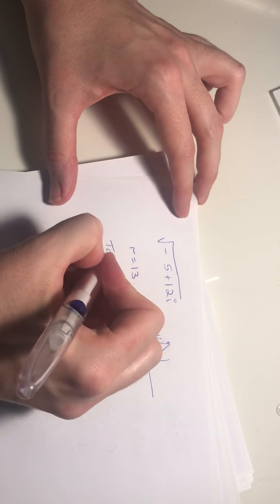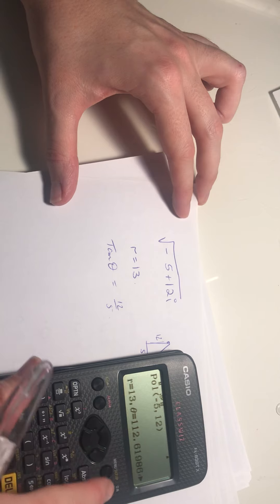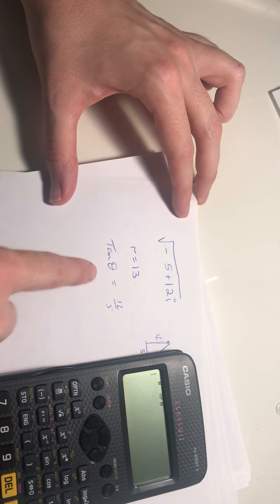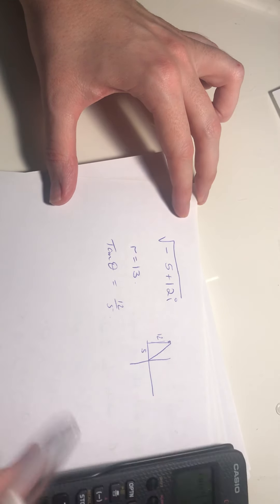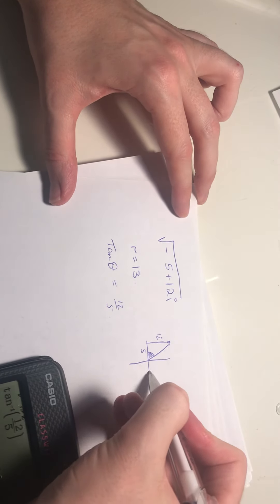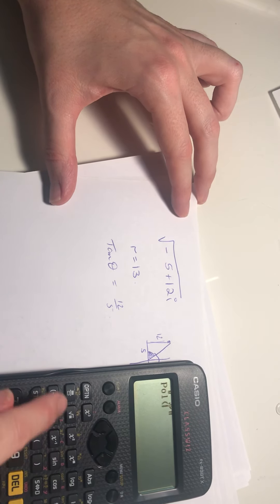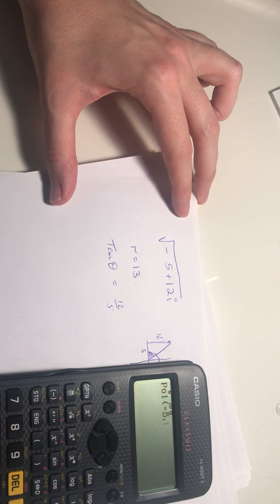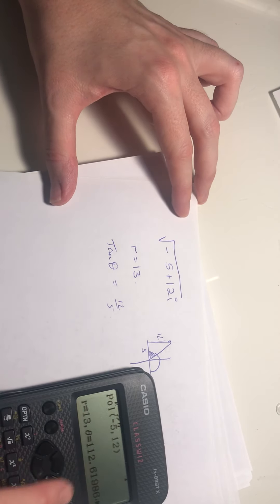So if we had minus 5 plus 12i somewhere up there, and this is 5 units and this is 12 units, so we could use tan of the angle is opposite over adjacent. So what's tan inverse? Maybe it's better to go in radians, I don't know. But if not, I'm just going to save that angle. So let's go tan inverse of 12 over 5.